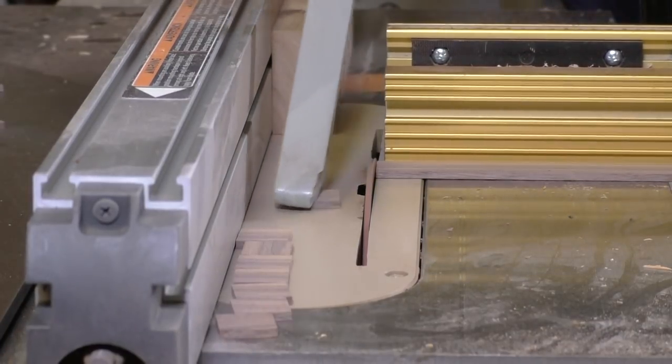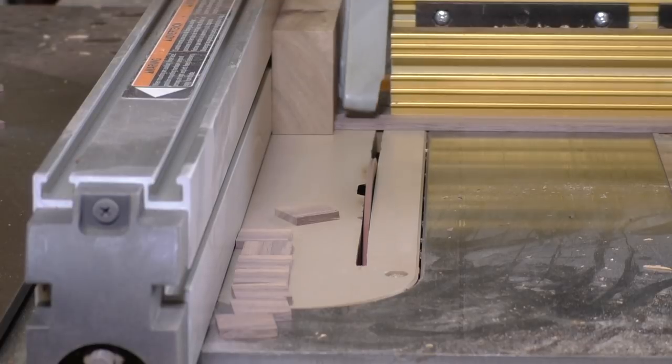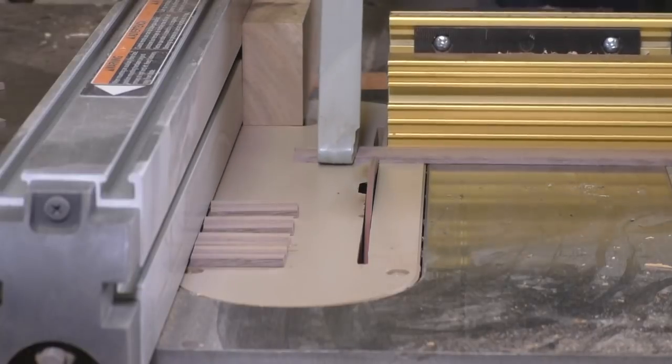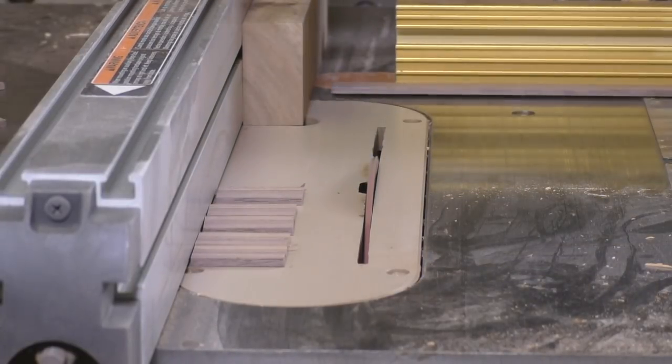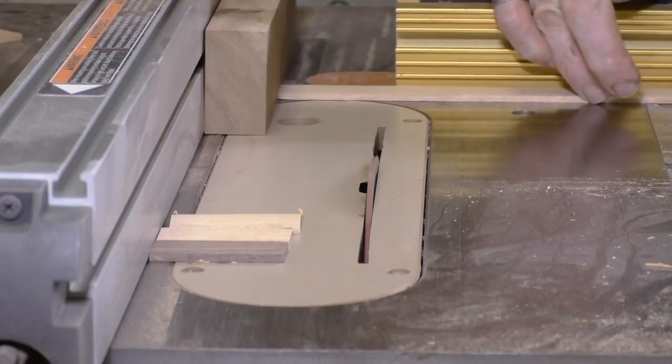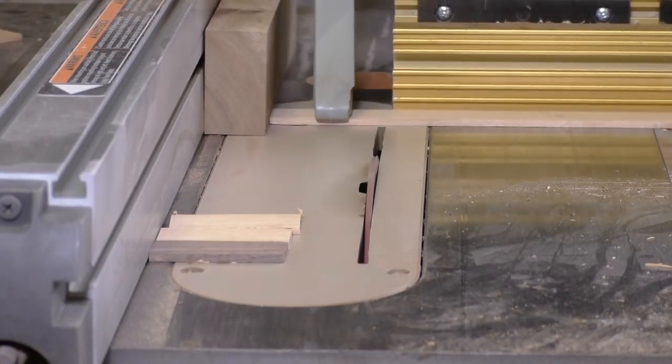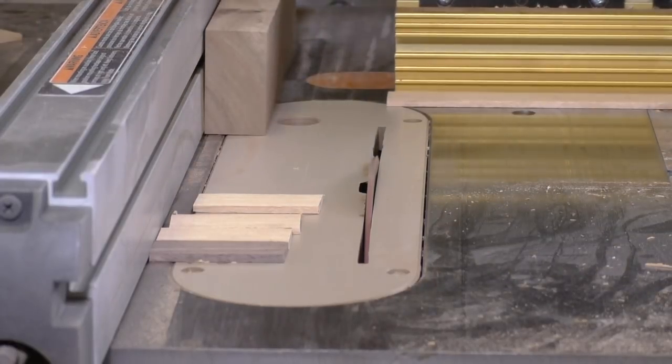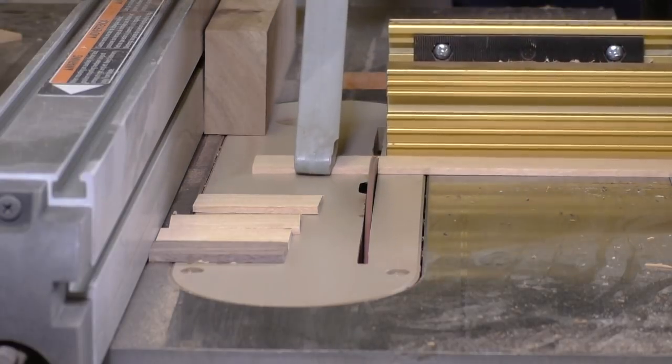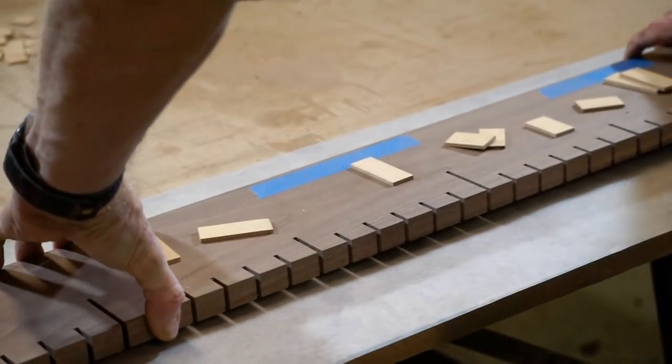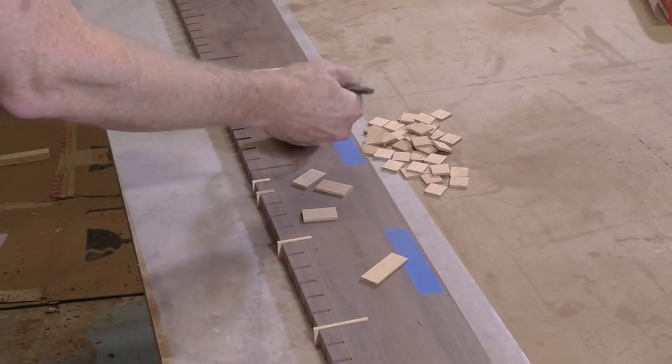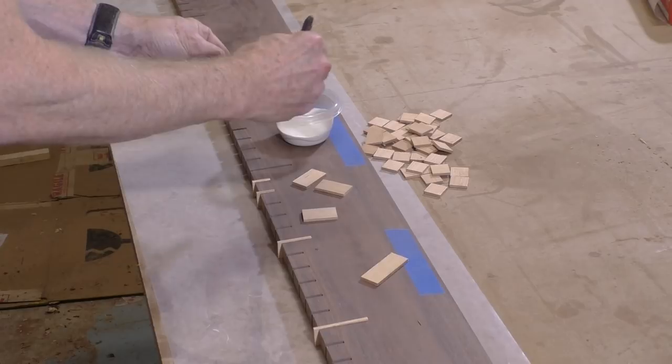I'm using a stop block against the fence to set the length that I'm cutting and it's important to do it that way so that you don't risk having the piece bind between the fence and the blade and risk having it kick back at you. And here I'm cutting the two inch pieces for the major increments. And now with all the pieces cut, it's time to insert them into the boards. And I'll do that just by gluing them in place.